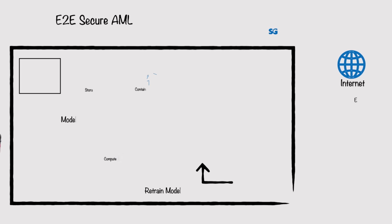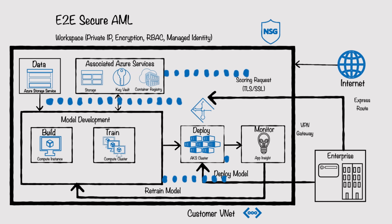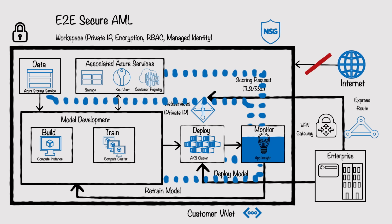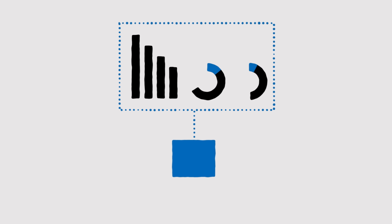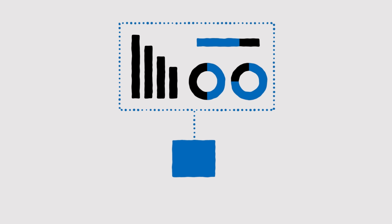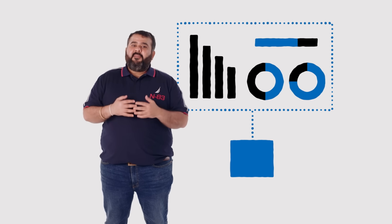For example, an organization can ensure that no machine learning workspace is created without a private link configured. Enabling observability across today's complex computing environments running distributed applications requires the collection of operational data from every layer and every component of the system. You need to be able to derive deep insights from this data and consolidate it into a single pane of glass with different perspectives to support the multitude of stakeholders in your organization. Azure Monitor collects and aggregates data from a variety of sources into a common data platform where it can be used for analysis, visualization, and alerting. It can provide you the ability to capture both metrics and workspace activity logs.